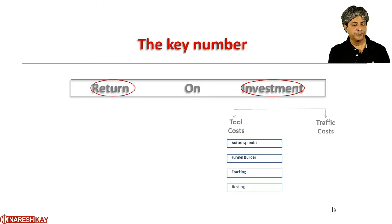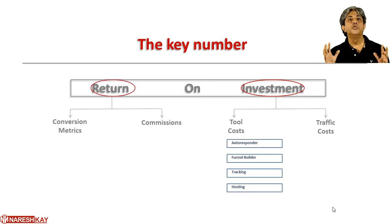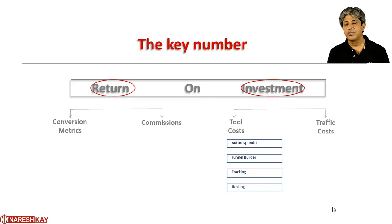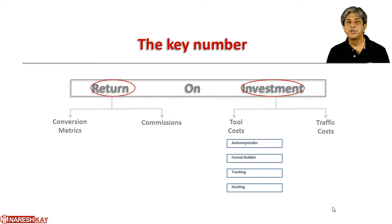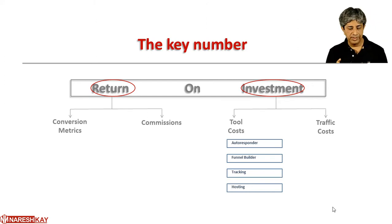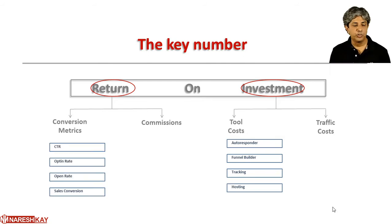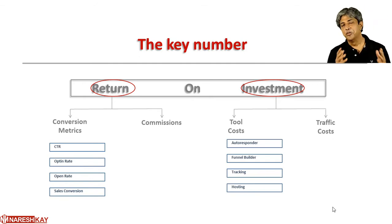Coming to the return part, there are again two broad heads. The first is commissions — for every sale you make, you earn a commission which is a percentage of that sale. If you're selling a product worth a thousand dollars, you're likely getting 30%, 40%, or 50% commission, not the full thousand. That commission is really your revenue. The second set of key metrics are what I call the conversion metrics: your CTR (click-through ratio) for the ad, the opt-in rate, the open rate, and the overall sales conversion.